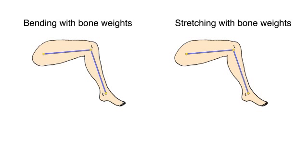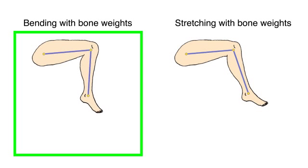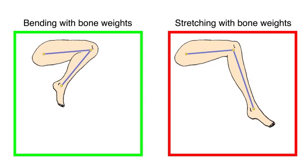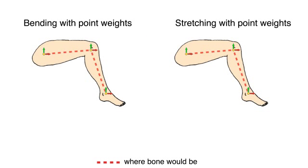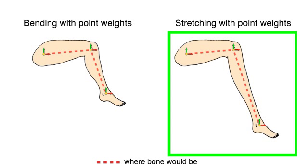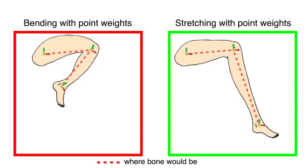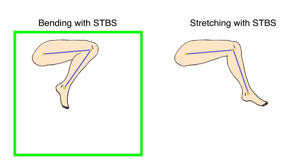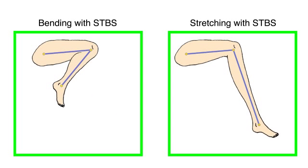Bone weights have been successful because they capture the natural rigidity of body parts. They perform well at bending. However, they are poor at controlling behavior along bone lengths, as is needed for stretching. Recent work has shown that point handles and point weights are a powerful alternative. Point weights properly treat stretching by blending translations, but struggle to maintain rigid regions when bending. We combine point weights and bone weights, allocating each to the tasks they are good at. Our method bends at joints and stretches without shape explosions.